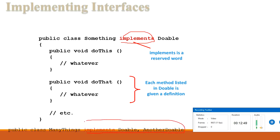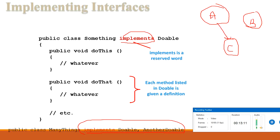A class can implement more than one interface. Recalling from inheritance, multiple inheritance — where class C is derived from both class A and class B — is not possible in Java through classes, but it is possible through interfaces. For example, class ManyThings which implements both interface Doable and another interface demonstrates multiple inheritance through interfaces.